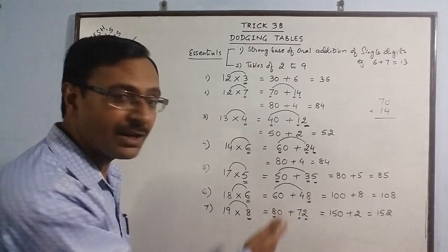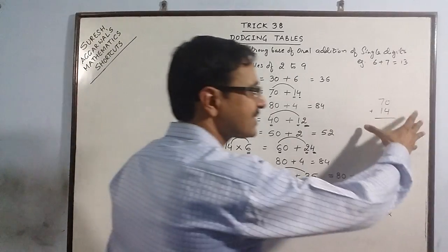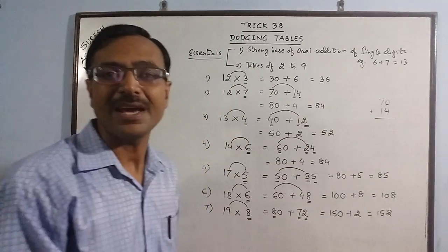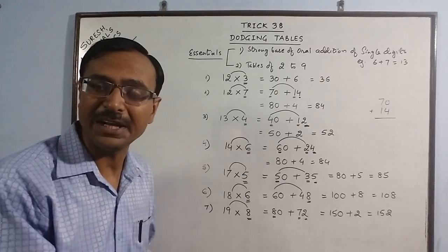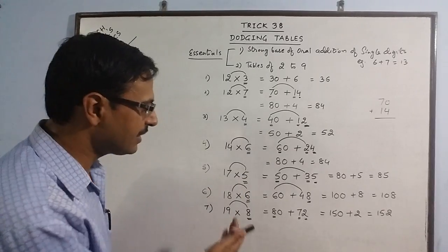Think of a child who does dodging tables like this and who is able to solve all these multiplications orally without any use of calculators, without any use of writing. See, I have not written even a single calculation on the side in the rough work. This everything has been done mentally. Please understand this method.